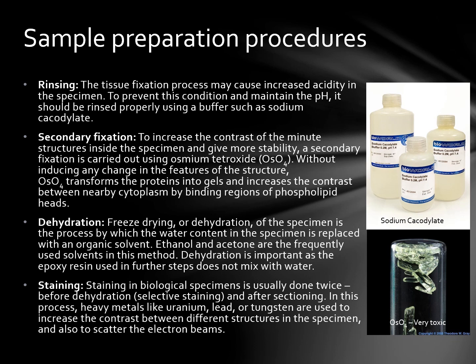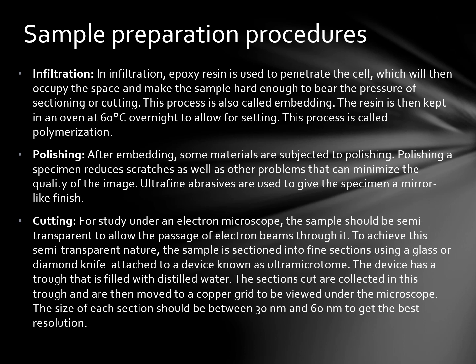Staining for biological samples is usually done twice: before dehydration for more selective staining, and after sectioning. Heavy metals like uranium, lead, or tungsten are used to increase the contrast between different structures and to scatter the electron beams. Infiltration is normally done using an epoxy resin, which penetrates the cell and makes the sample hard enough to bear the pressure of sectioning. This process is also called embedding. The resin is kept in an oven at 60 degrees overnight for setting, a process called polymerization.